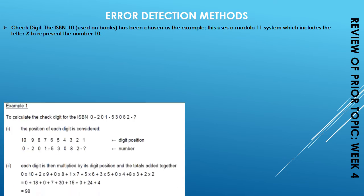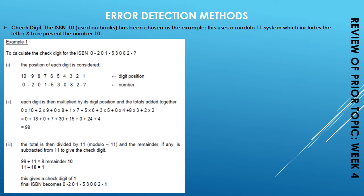Let's calculate a check digit with an example. We are given an ISBN number and need to calculate the check digit. The example shows ISBN number 0-2-0-1-5-3-0-8-2 followed by a question mark, indicating the check digit to be found. The first step is to assign a digit position to each digit of the ISBN number, starting from the extreme right side and incrementing by one.